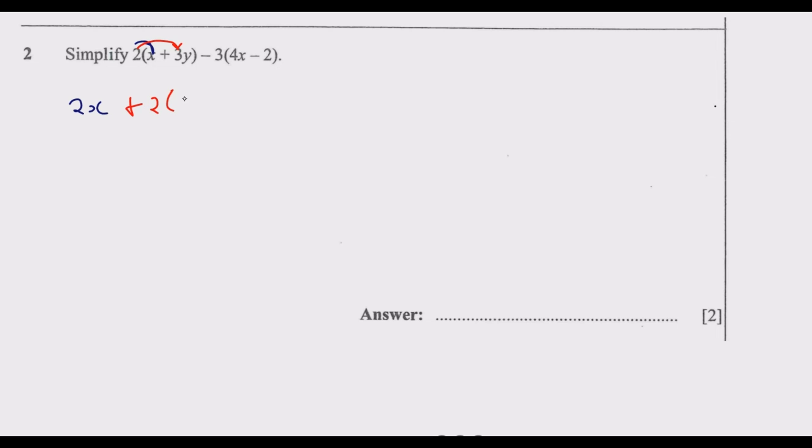Let us look at question 2: simplify 2 multiplied by open bracket x plus 3y, minus 3, open bracket 4x minus 2, close bracket. This is one of the most common questions that comes up every year. What you need to watch out for is brackets and negatives. You need to expand step by step — first multiply 2 by this bracket, giving 2x, then 2 multiplied by 3y.